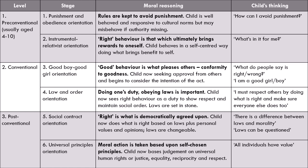The first level is the pre-conventional level, usually ages four to ten, though remember the stages vary in speed but not structure. Within level one you have stages one and two. Stage one is punishment and obedience orientation: rules are kept to avoid punishment. The child may be well behaved and responsive to cultural norms, but may misbehave if that authority is missing. The child is thinking, 'How can I avoid getting punished?' — and that is why they would behave in a moral way.